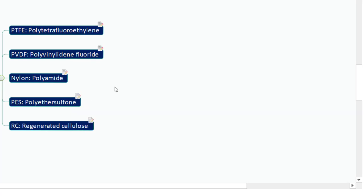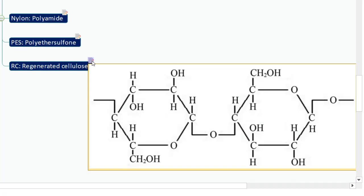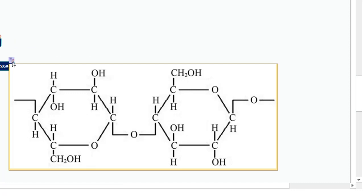The last one is RC, or regenerated cellulose membrane. The regenerated cellulose filters have two different functional groups: hydroxy functional groups, and ether functional groups present between two cyclic rings.